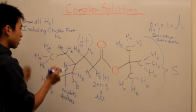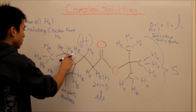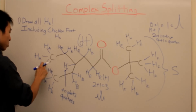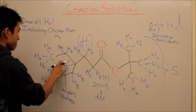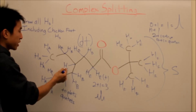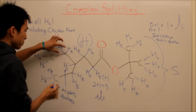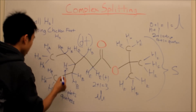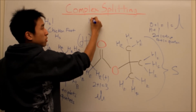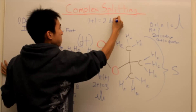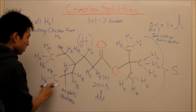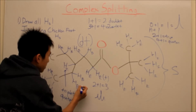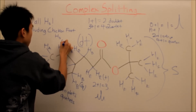Let's do HB next. HB is being split by one bond, two bonds, three bonds on each side. HBs are being split by one hydrogen here and three hydrogens over here. So the lower one first: one hydrogen plus one equals two — that's a doublet. Then three hydrogens plus one equals four — that's a quartet. So both HBs will be doublets of quartets.